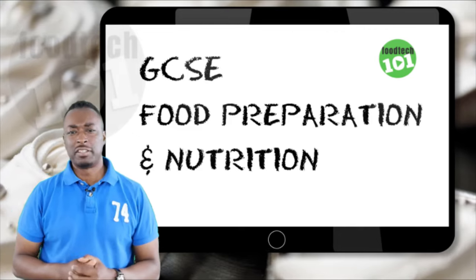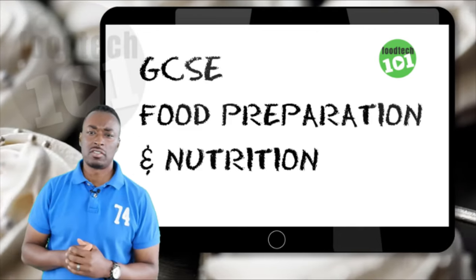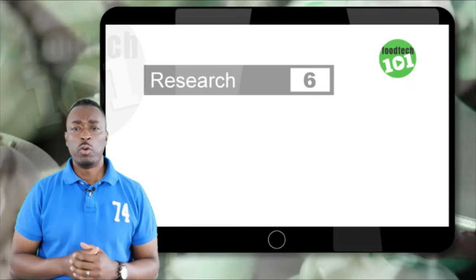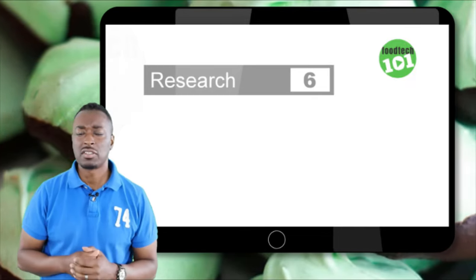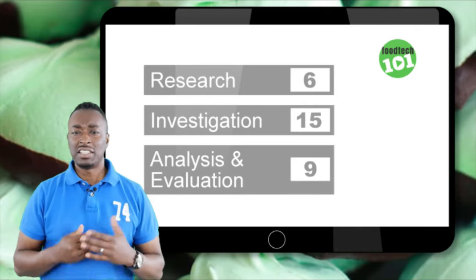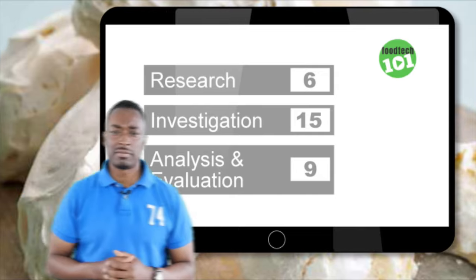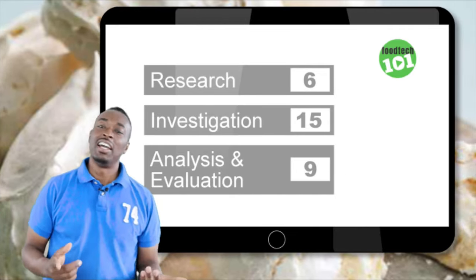Okay, let's jump straight in. The NEA one is divided into three main sections: research, which is worth six marks; investigation, which is worth 15 marks; and analysis and evaluation, which is worth nine marks.